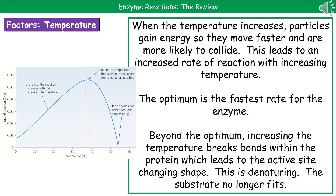The optimum temperature in this case is around 37 degrees Celsius, which suggests it's an enzyme designed to work inside the human body. Each enzyme has a different optimum temperature depending on where it's designed to work. For example, an enzyme designed to work in a hot spring would have a much higher optimum temperature, so optimums will change depending on where the enzyme was designed to work.